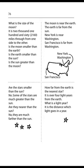Page 76. What is the size of the moon? It is 2,160 miles through from one side to the other. Is the moon smaller than the earth? Is the earth smaller than the sun? Is the sun greater than the moon? The moon is near the earth. The earth is far from the sun. Are the stars smaller than the sun? No, some of the stars are much greater than the sun. Are they nearer than the sun? No, they are much farther than the sun. How far from the earth is the nearest star? It is over 4 light years from the earth. What is a light year? It is the distance which light goes in a year.